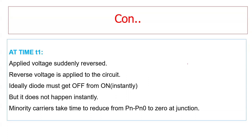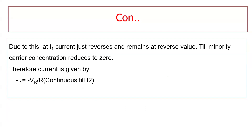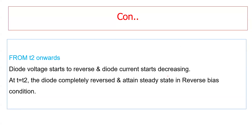After the storage time, the diode voltage starts to reverse at time t1. The applied voltage is suddenly reversed, and the reverse voltage applied to the circuit makes the diode transition from ON toward OFF, but this does not happen instantly. The diode voltage starts to reverse and completely attains its final steady state in some time — that time is called the transition time, denoted t_t. At t1, due to the minority carriers reducing from p_n minus p_n0 to 0 at the junction, the current reverses.